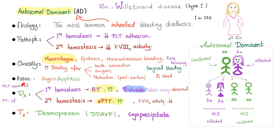Von Willebrand disease is associated with angiodysplasia. For diagnosis: primary hemostasis defect means bleeding time is prolonged, and the ristocetin cofactor assay is abnormal. Secondary hemostasis: APTT is prolonged and factor VIII activity is low. However, platelet count is normal and PT is also normal.